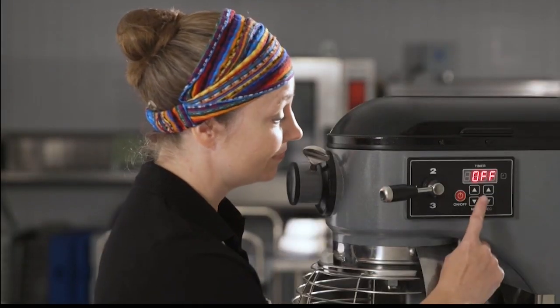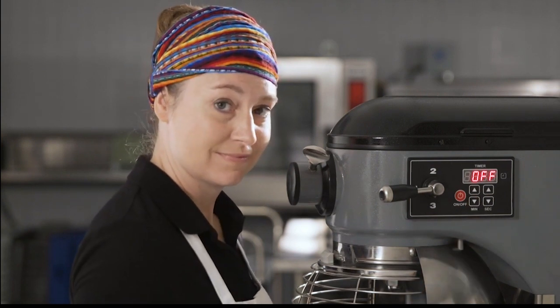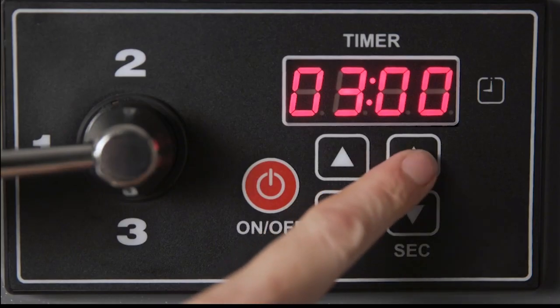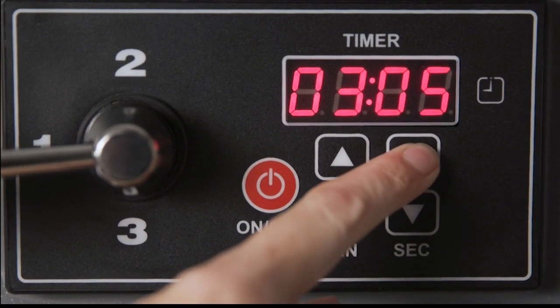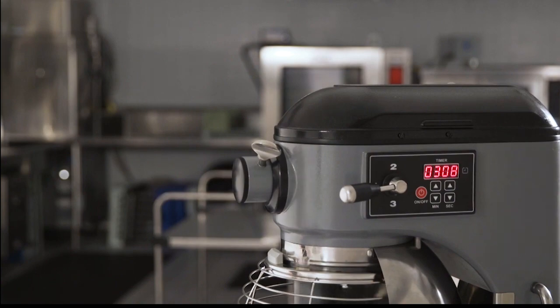Precision is key. The minute up and down arrows will allow you to increase or decrease the timer by one minute intervals. The second arrows will do the same with seconds. The minutes and seconds are set independently, so you can be precise and fast.